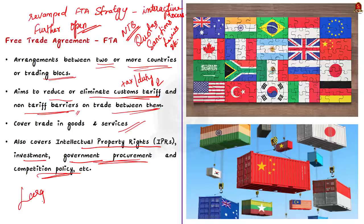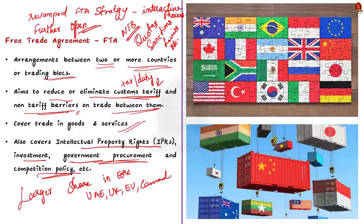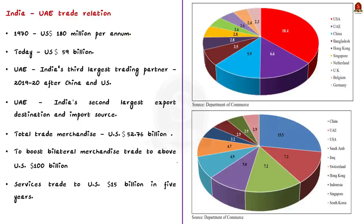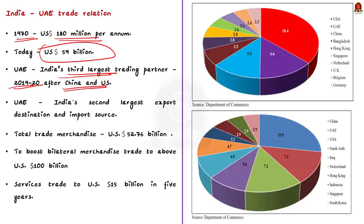India will fast-track trade deals with at least six countries including the United Arab Emirates, United Kingdom, European Union, Canada, and Australia. Thus trade relations with UAE hold much significance. India-UAE trade in 1970 was valued at US $180 million per annum, but today it is over US $59 billion, making UAE India's third largest trading partner for 2019–2020, after China and the US. Now UAE is India's second largest export destination and import source.